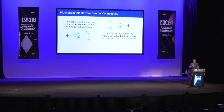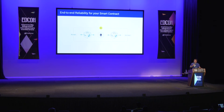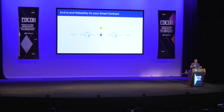It also allows for cross-chain communication between different blockchain protocols. When you're writing these smart contracts, what you want to consider is end-to-end reliability. You've got this deterministic, immutable record — smart contracts are going to execute as they should, as long as they have the inputs they need to execute.